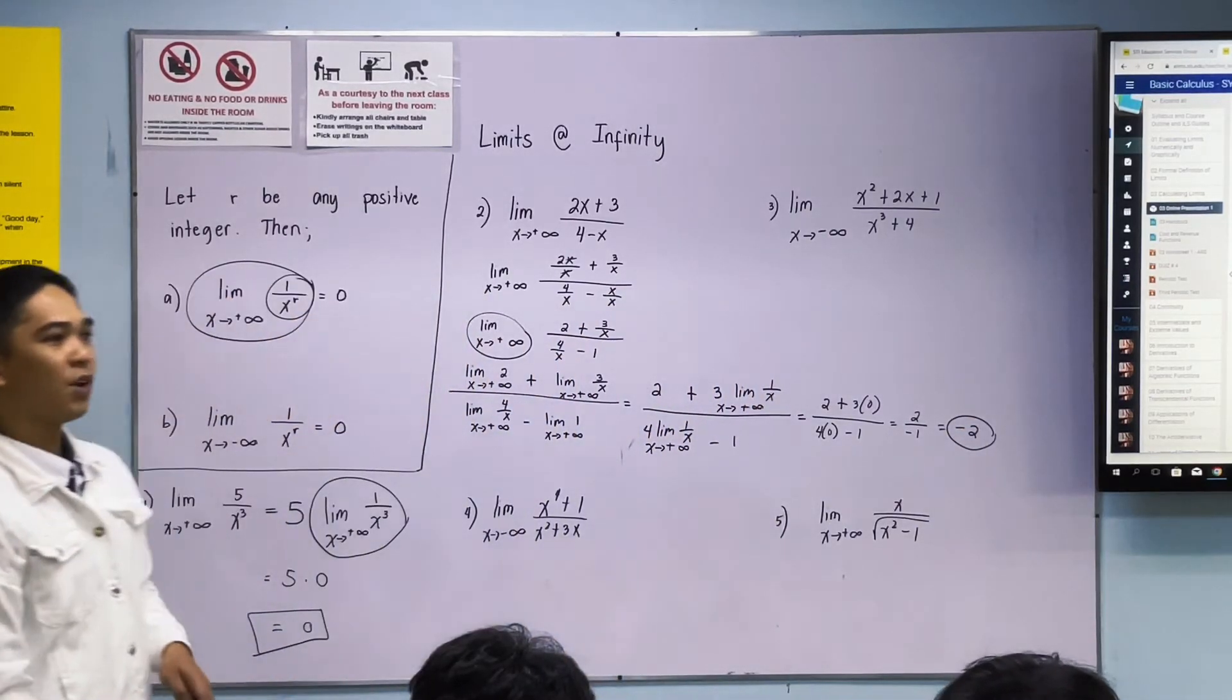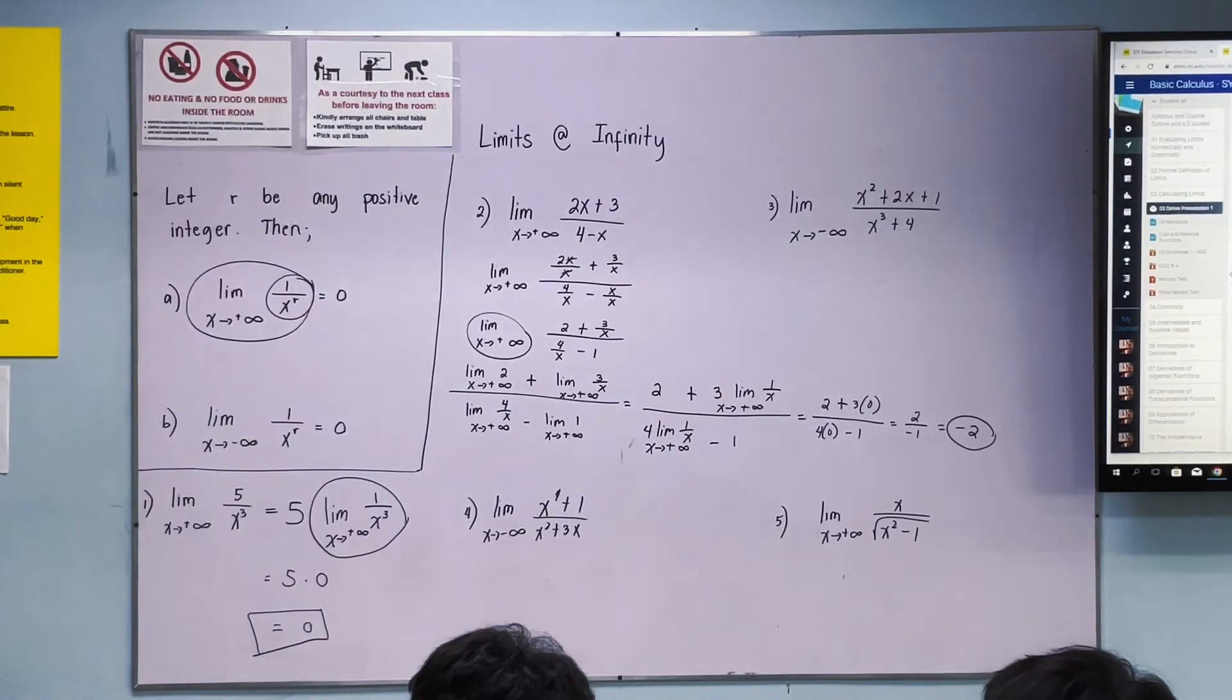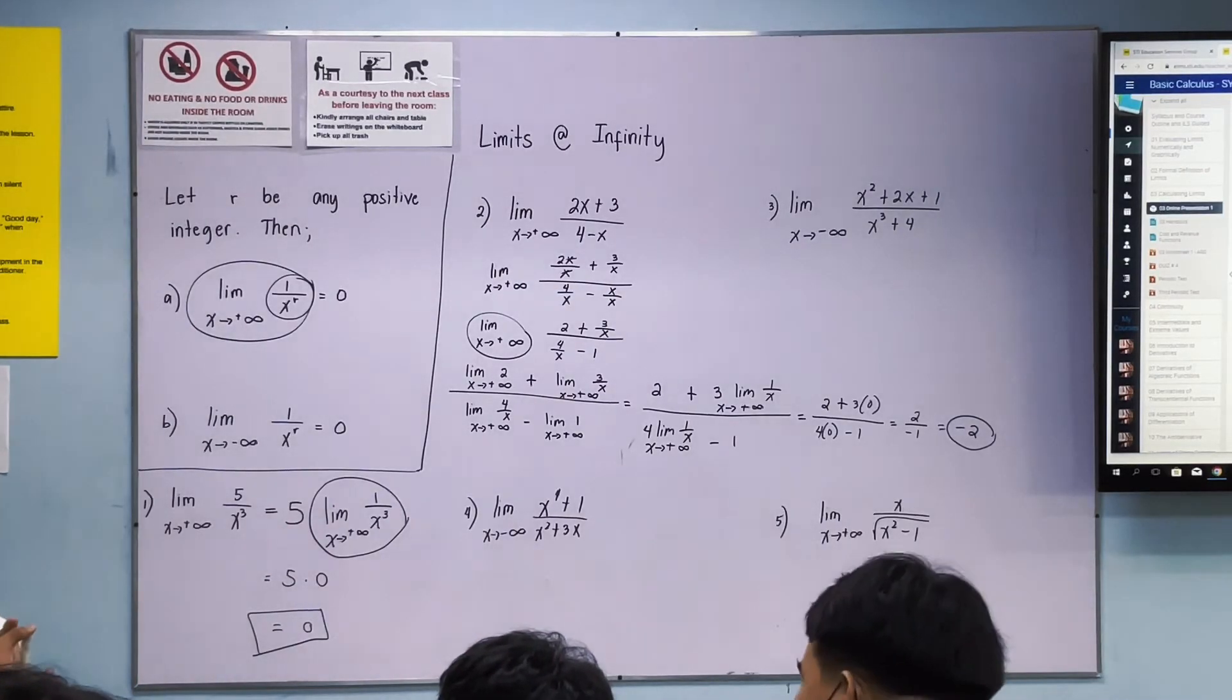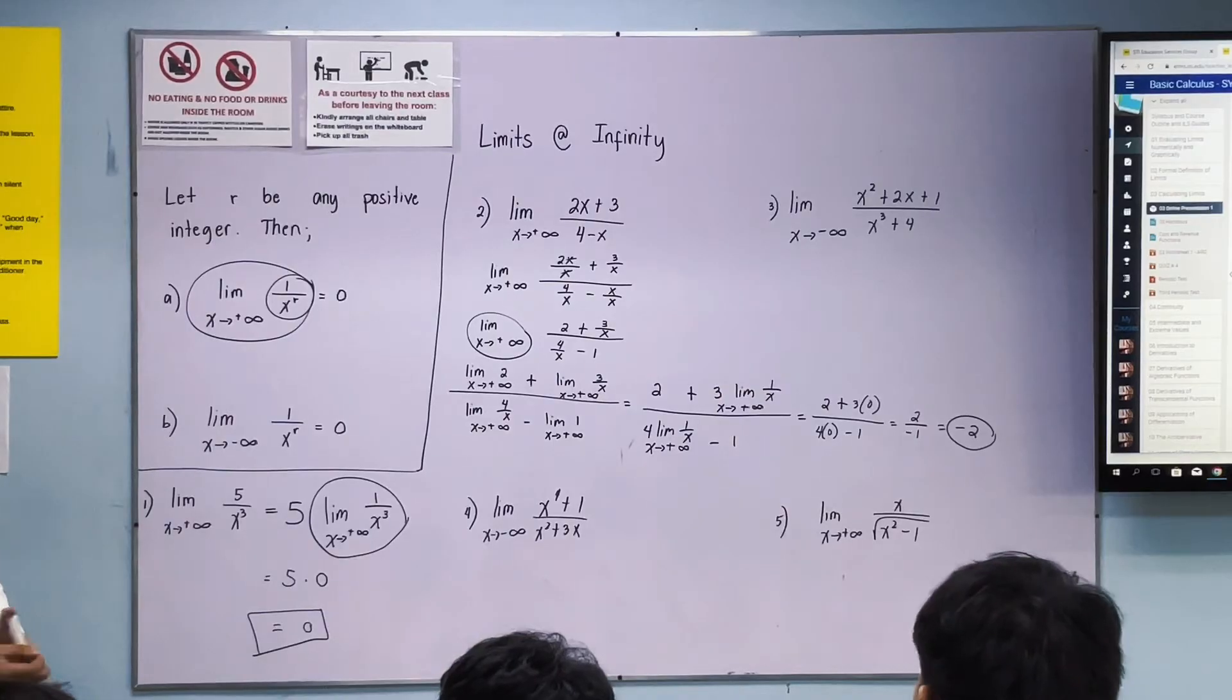Negative 2. So not all our answers are 0. It's possible to have a value. It's a bit long. If number 2 is long, try number 3.